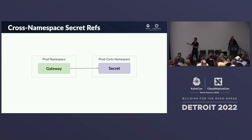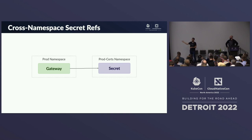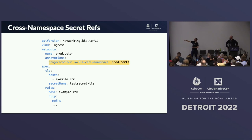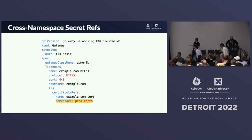Another advanced use case: some organizations don't feel comfortable having TLS certs in the same namespace as their application and Ingress configuration. Some implementations had creative solutions — for example Contour has an annotation on Ingress allowing you to say your certs live in a different namespace. With Gateway API, our certificate references on Gateway simply have a namespace field to reference a secret in a completely different namespace.